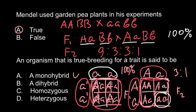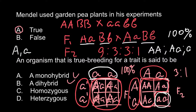Now, answer C: homozygous. What is homozygous? Imagine we have one locus with two variants of the same gene, which we call alleles — one dominant and one recessive: capital A and small a. A diploid organism can produce three genotypes: capital A capital A, capital A small a, and small a small a. The two genotypes capital A capital A and small a small a we call homozygous, and the middle one — capital A small a — we call heterozygous.